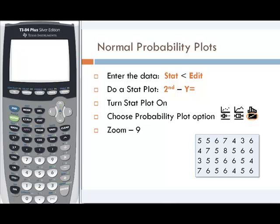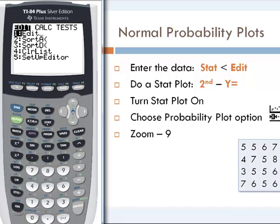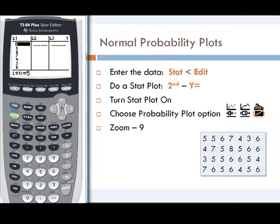If our data is perfectly linear, then we would say our data is perfectly normal. To get your calculator to do these normal probability plots, you first have to put your data into the calculator. We'll do that by doing STAT and then EDIT, and then you will enter your data set.